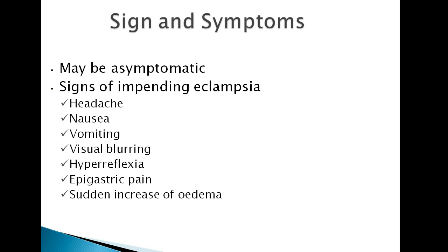The signs and symptoms of preeclampsia: if it's mild preeclampsia, the patient may be asymptomatic. If it's very severe preeclampsia, the patient may have headache, nausea, vomiting, visual blurring, hyporeflexia, epigastric pain, and sudden increase of edema.